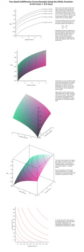Consumer theory uses indifference curves and budget constraints to generate consumer demand curves. For a single consumer, this is a relatively simple process. First, let one good be an example market good (e.g., carats), and let the other be a composite of all other goods. Budget constraints give a straight line on the indifference map showing all the possible distributions between the two goods. The point of maximum utility is the point at which an indifference curve is tangent to the budget line. If the market values a good more than the household, the household will sell it; if the market values it less, the household will buy it. The process continues until the market's and household's marginal rates of substitution are equal.